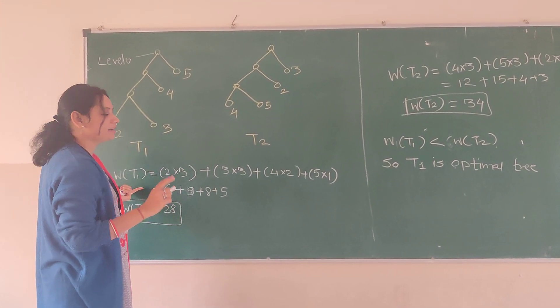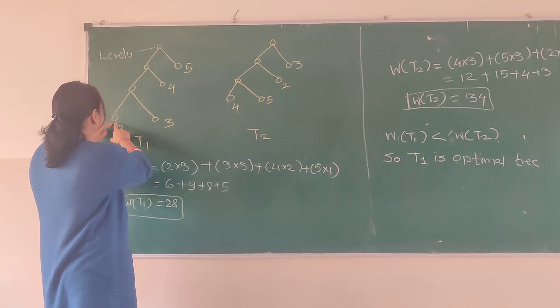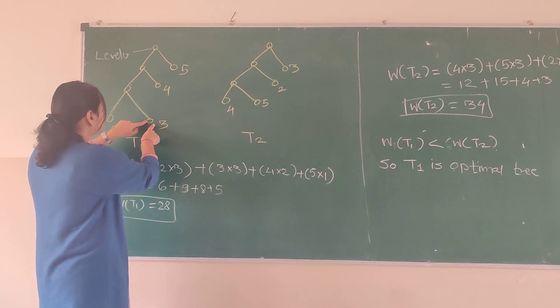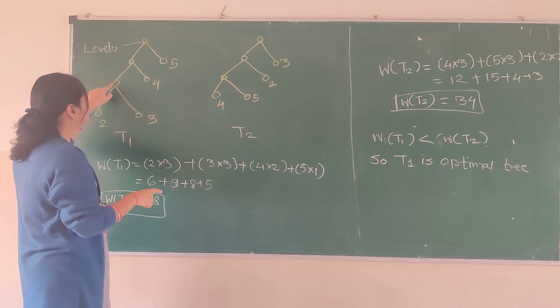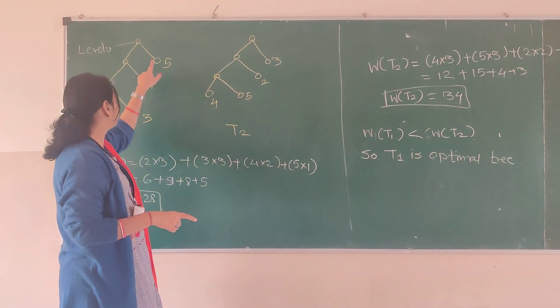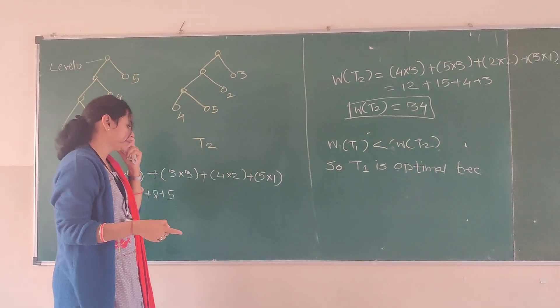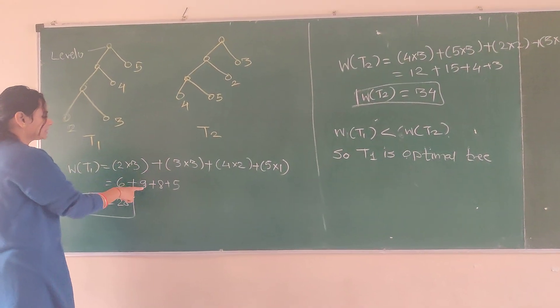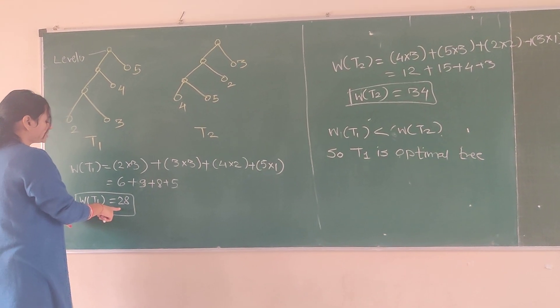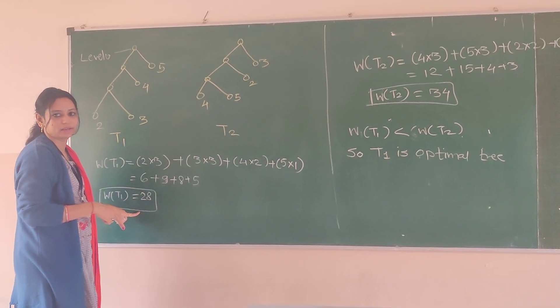Now we can find out the weight for T1. As it is at level 3, it is 2 into 3 plus 3 into 3 as it is for level 2, 4 into 2 plus 5 into 1. So that is 6 plus 9 plus 8 plus 5. The weight of this tree T1 is 28.